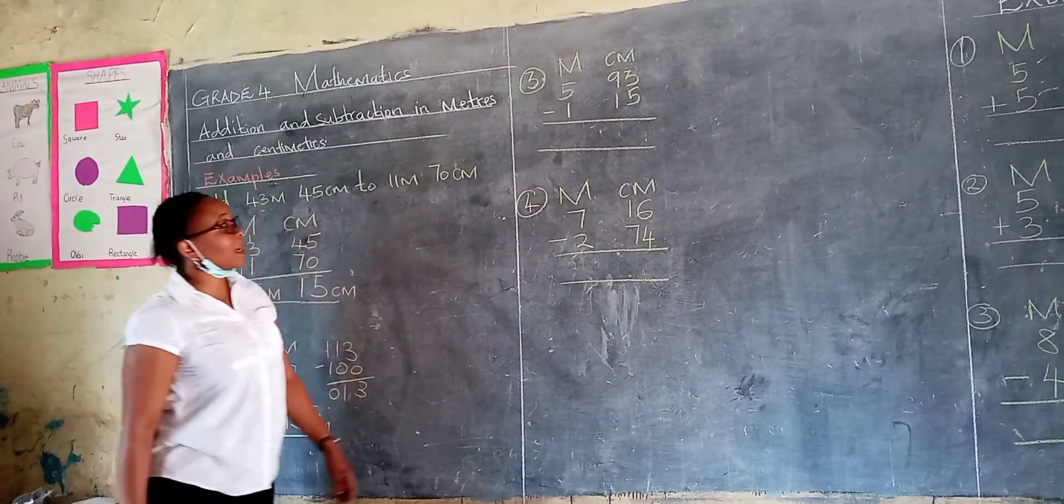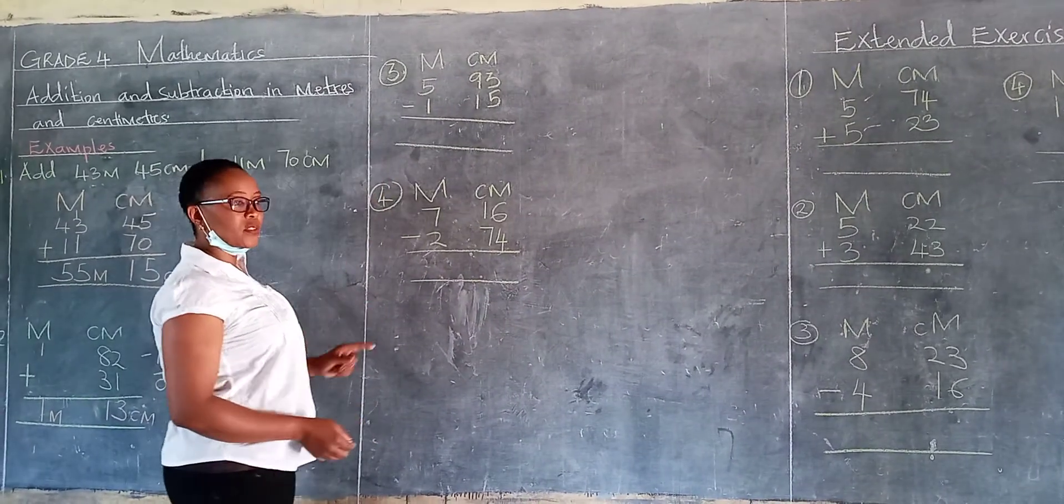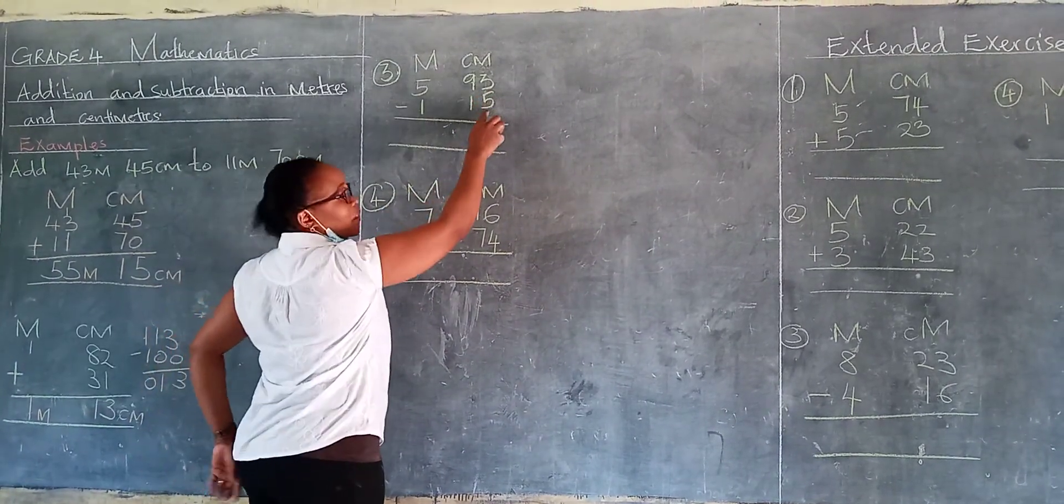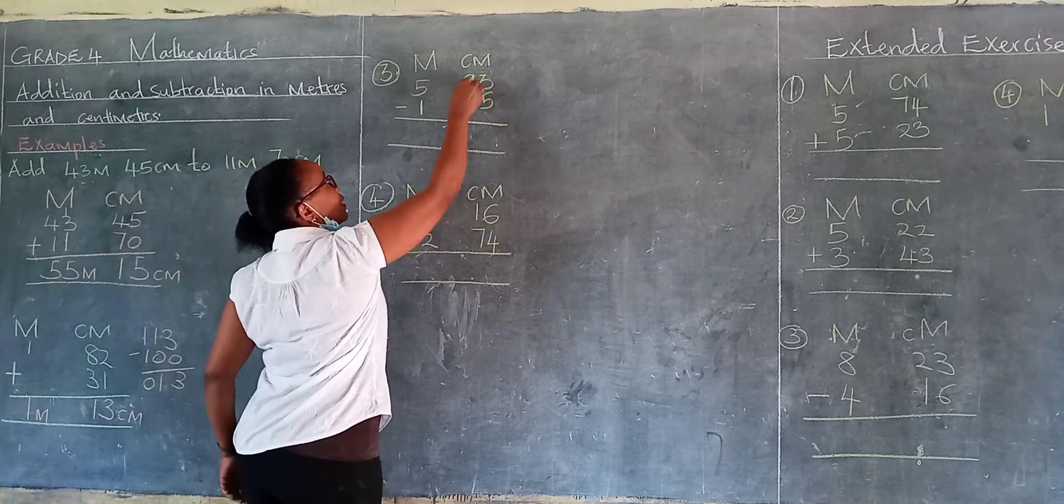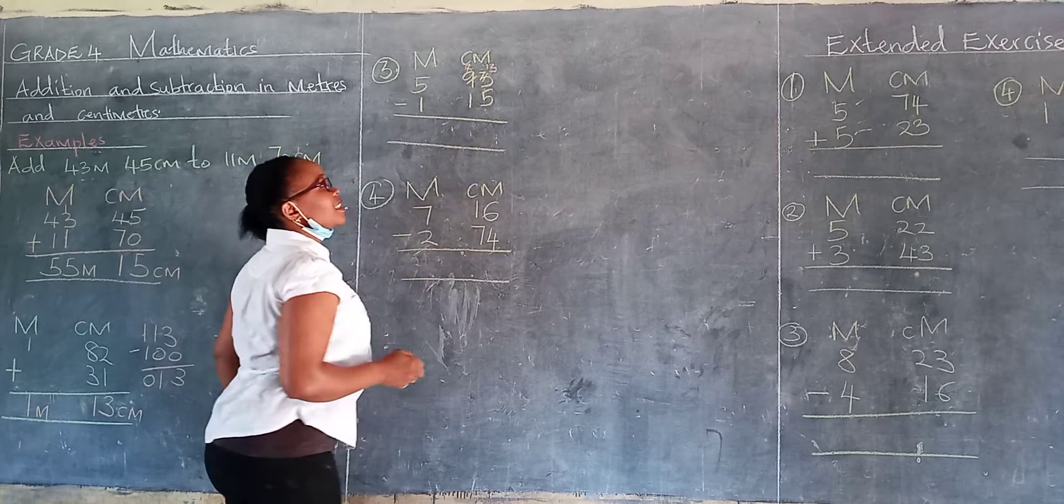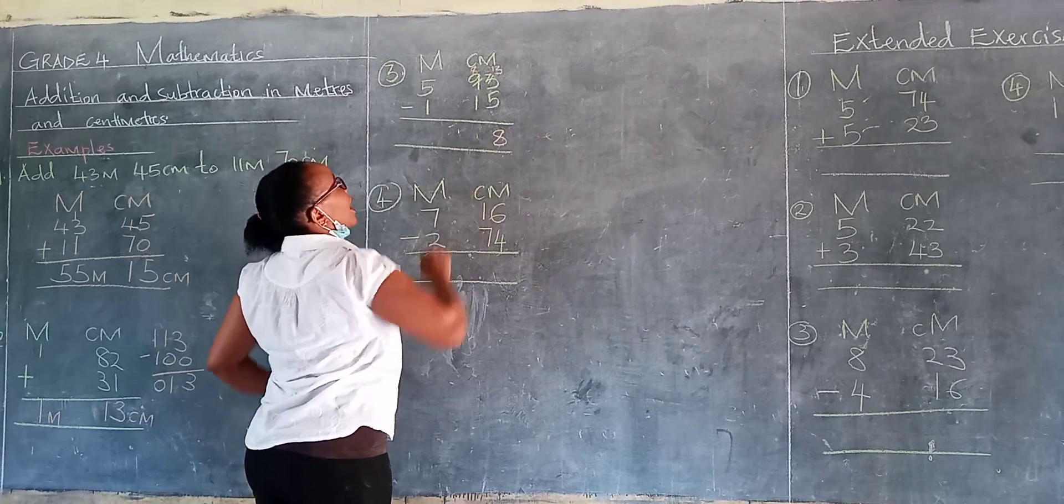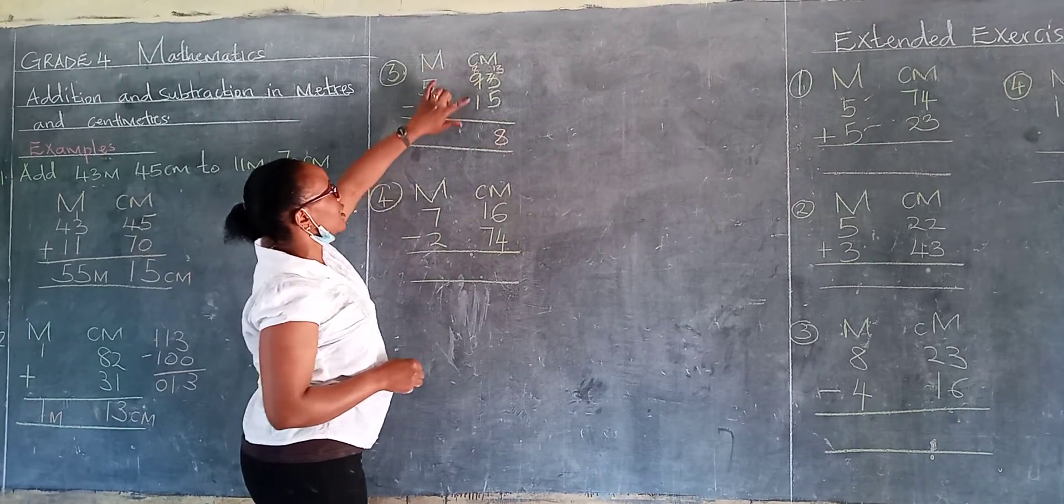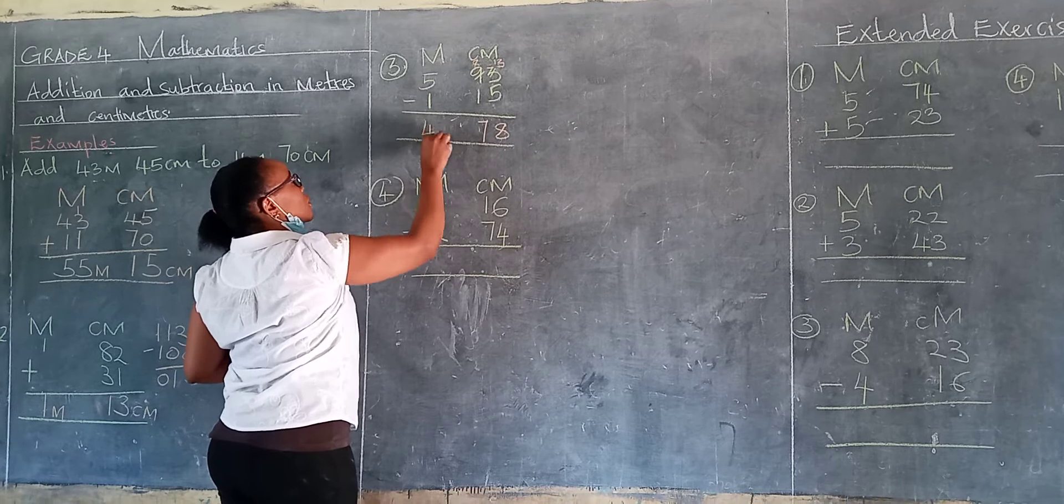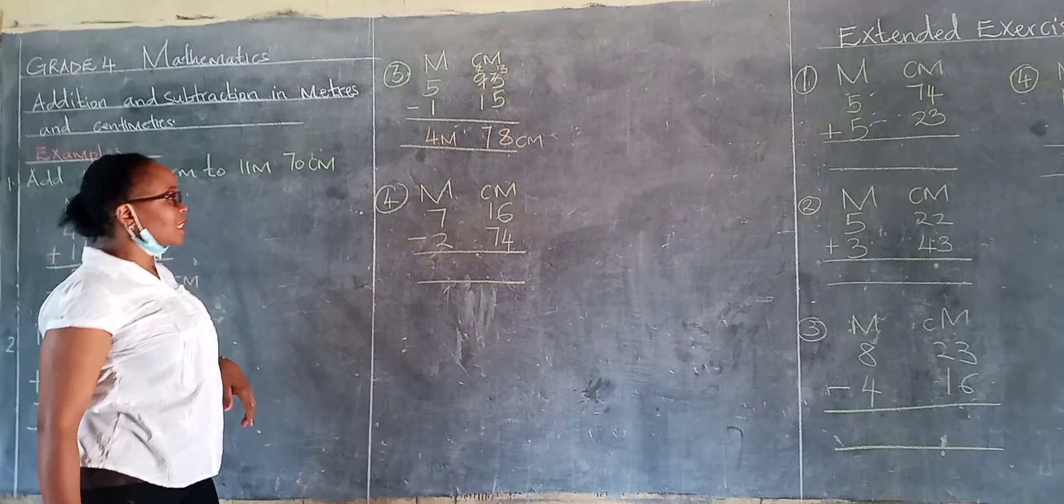Let's see the third example. We have meters and centimeters. Now we have take away. These two examples, we are going to teach ourselves how to take away meters and centimeters. 3 take away 5 is impossible. We borrow 1. It remains 8 and this 3 becomes 13. 13 take away 5, the answer is 8. Here we have, we are left with 8. 8 take away 1 is 7. Then 5 take away 1 is 4. So our answer is 4 meters 78 centimeters.